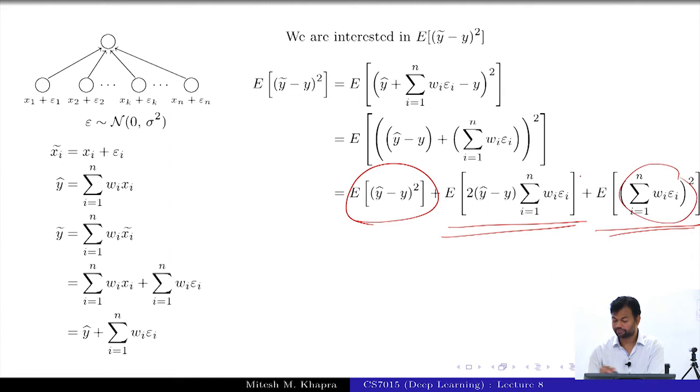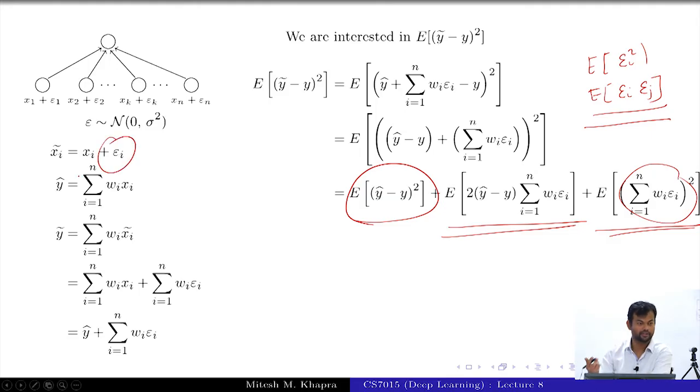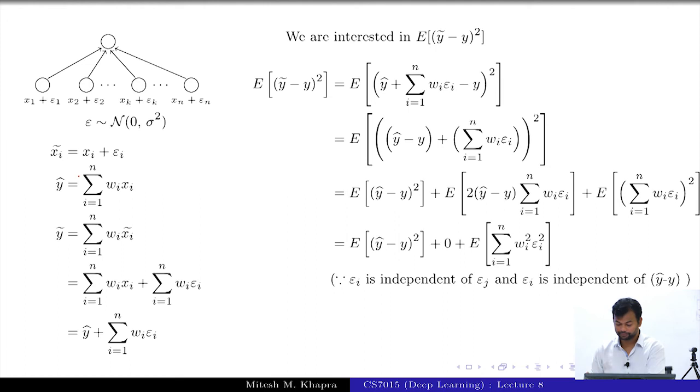Now, let us look at the last term. This is a square of a sum. What kind of terms would you have inside? You will have some terms which are epsilon i squares and you would have some terms which are epsilon i epsilon j. We will have some expectations which are going to be something into epsilon i square and some expectations which are going to be epsilon i epsilon j. Which of these terms would disappear? These terms. Why? Because the noises are independent. If I have drawn a noise for one instance it does not have any influence on the noise that I am going to add to the next instance. All these features, the noise added to the features are independent.